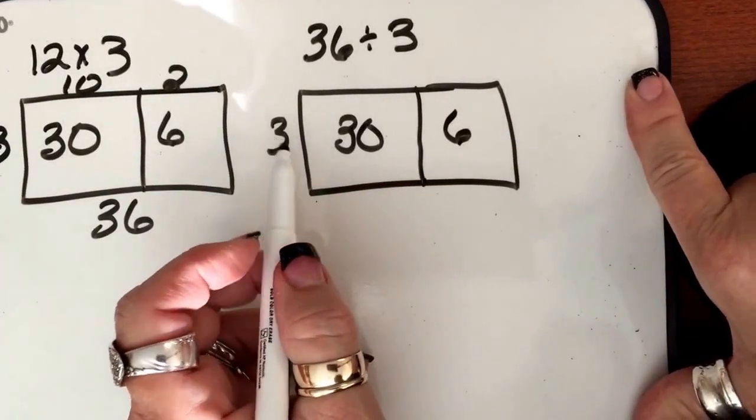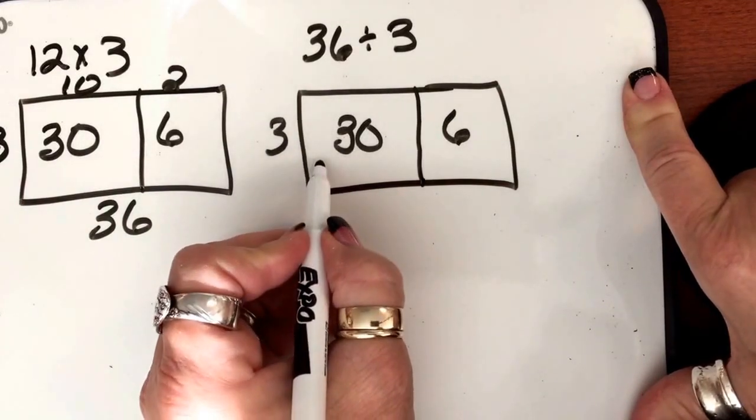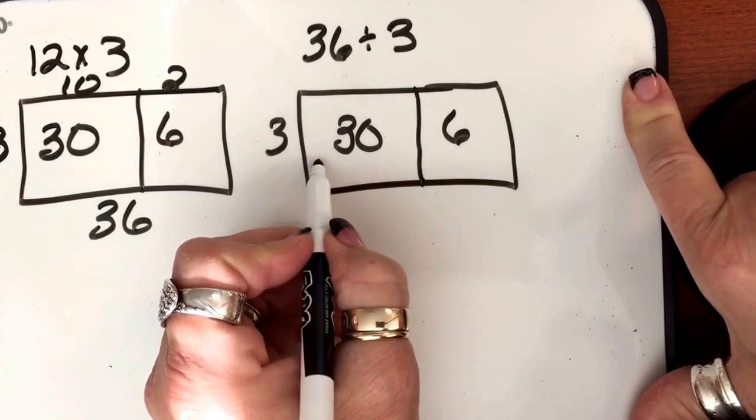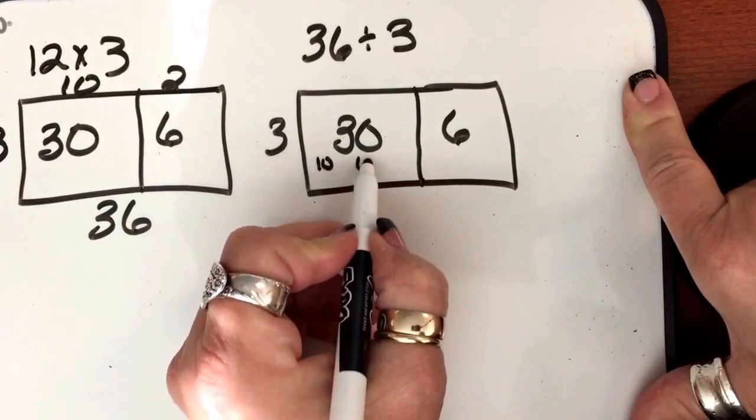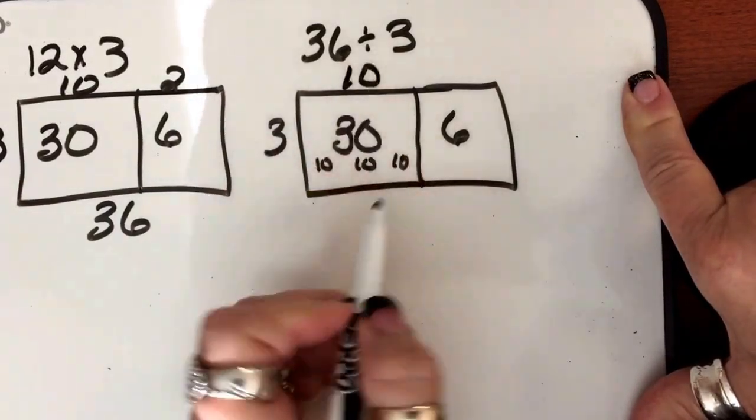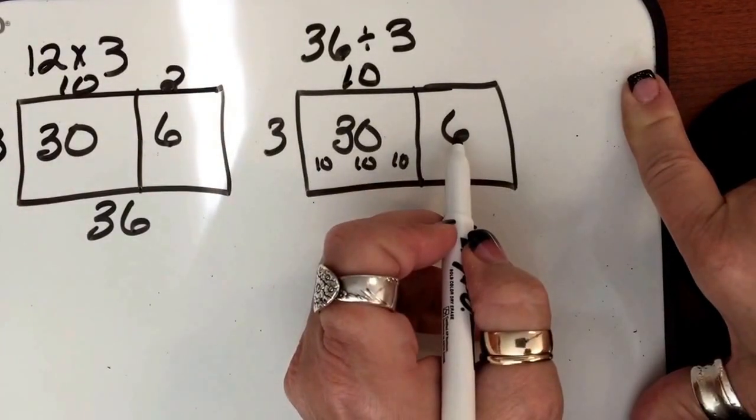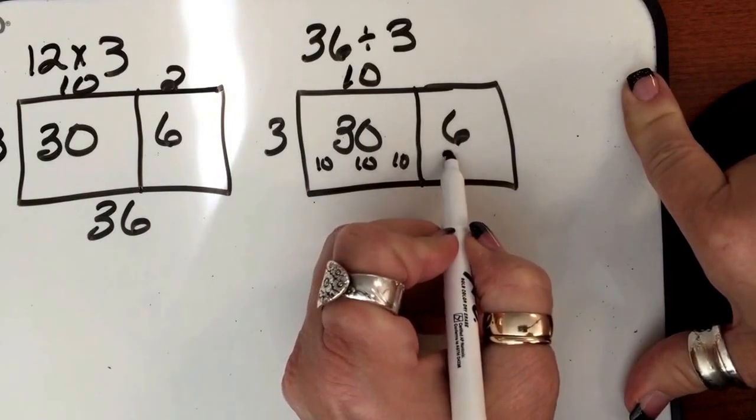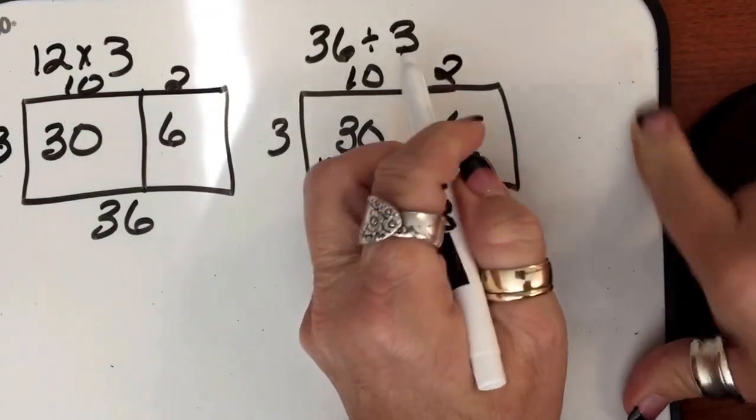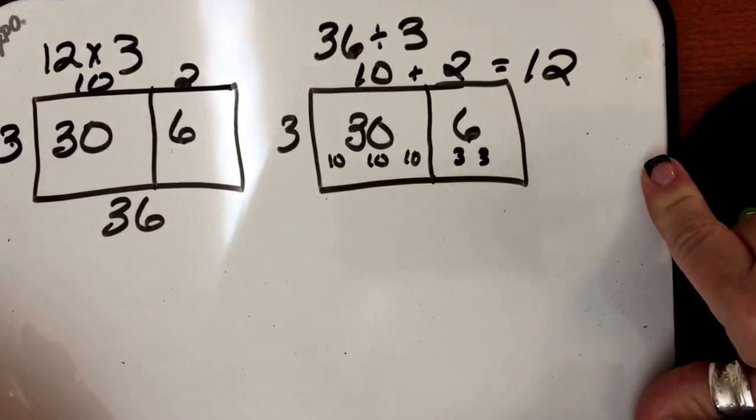So this is going to be our 30, and this is going to be our 6. So we're going to say, how many times will 3 go into 30? Well you can even talk to the kids about, even if you did it with the rods again, until they get it, but this is 10, 10, and 10, it's 10 times 3. So this must be 10. And 3 times what will give you 6, or if you think about it, 3 and 3, right, that is times 2. So the answer has to be 12.